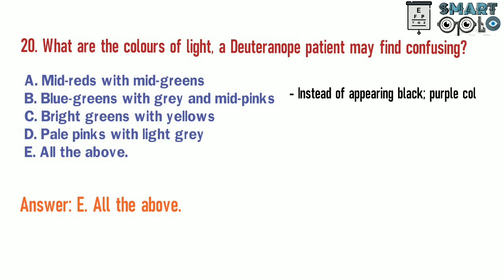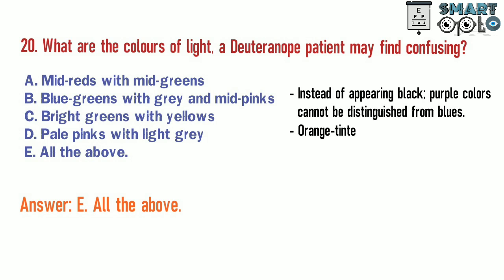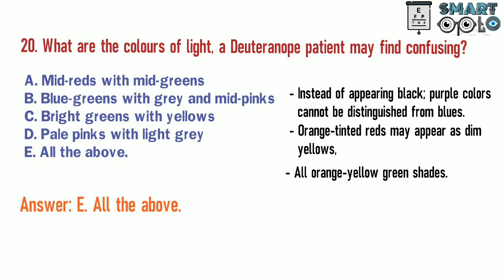Instead of appearing black, purple colors cannot be distinguished from blues. Orange-tinted reds may appear as dim yellows. All orange-yellow-green shades are similarly affected.